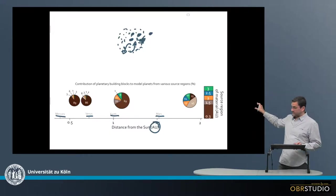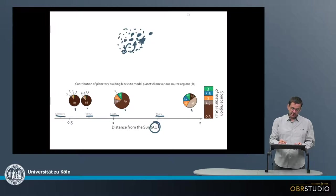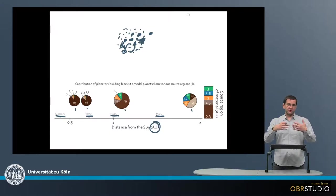And the four planets shown here have been modeled in the way as just explained. So by simply looking at the dynamics in this system and how these planetesimals were scattered throughout the disk and accreted into planets.